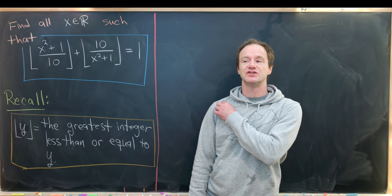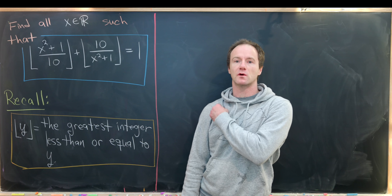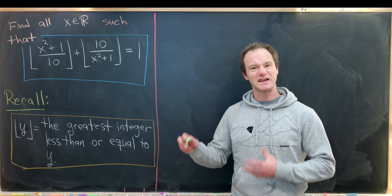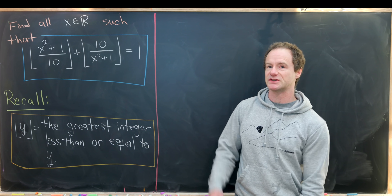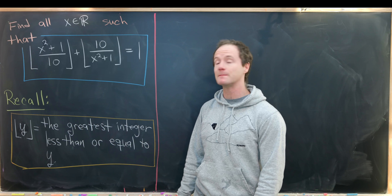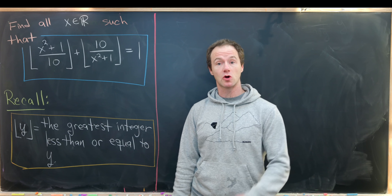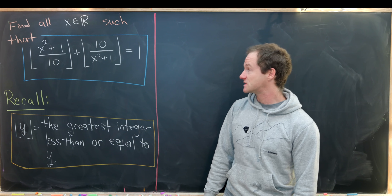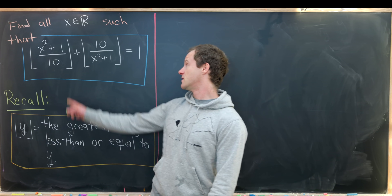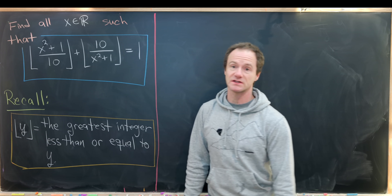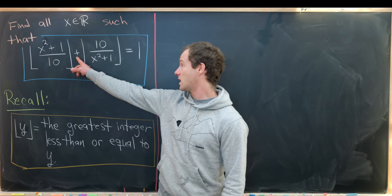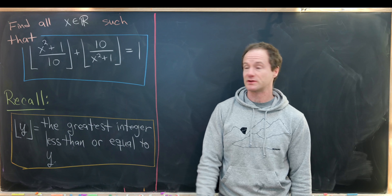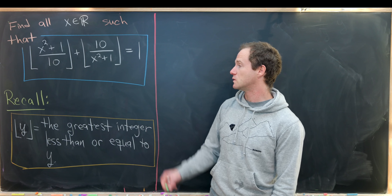Here we have a nice equation involving the floor function, which is one of my favorite functions because it mixes continuous and discrete mathematics so beautifully. Our goal is to find all real numbers x such that the floor of (x squared plus 1) over 10, plus the floor of 10 over (x squared plus 1), equals 1.